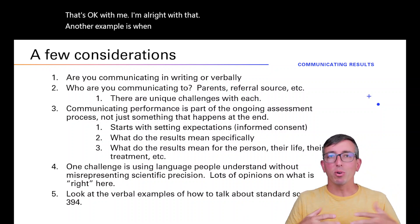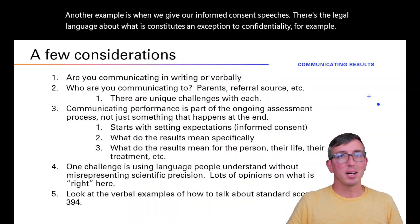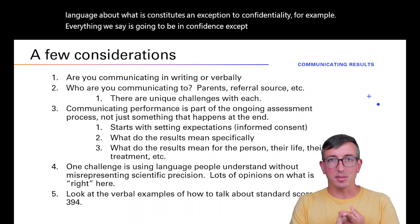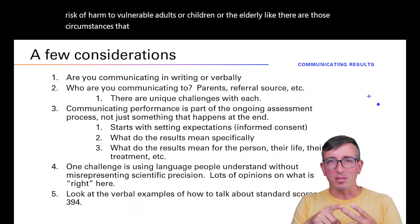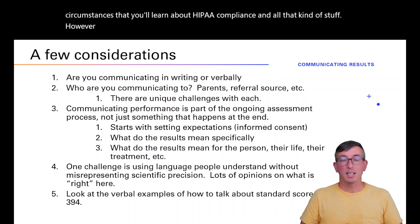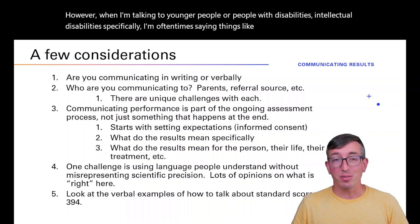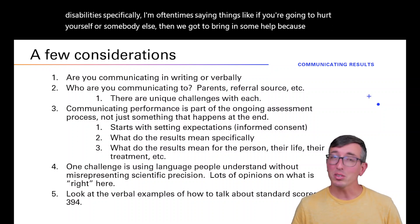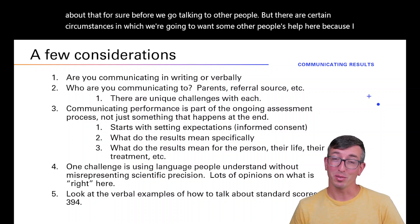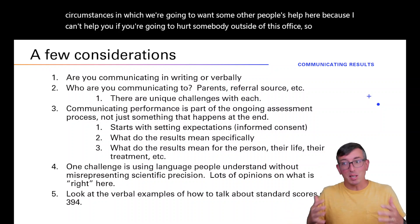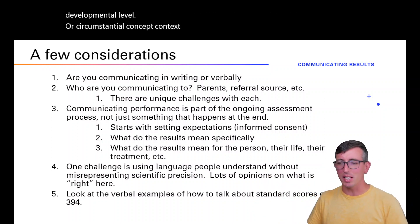Another example is informed consent speeches — there's legal language about exceptions to confidentiality, like risk of harm to self or others, or risk to vulnerable adults or children. However, when I'm talking to younger people or people with intellectual disabilities, I say things like: if you're going to hurt yourself or somebody else, we need to bring in some help. It's completely appropriate to change the way you're talking depending on developmental level or what people understand.